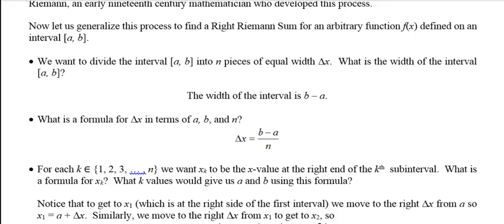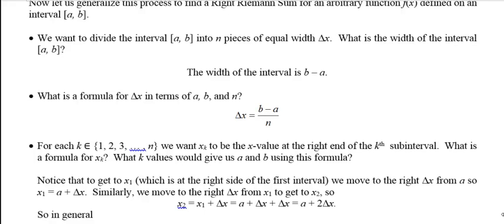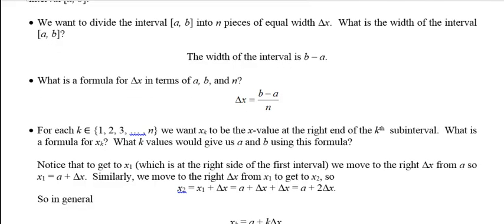So x₁, that's going to be the x value at the right side of the first interval, at the right side of the first rectangle. So to get there, we start at a on the left side of the first rectangle, and we move to the right by Δx. So x₁ is a plus Δx. Similarly, we move Δx from x₁ to get to x₂. So x₂ is x₁ plus Δx, or in other words, a plus Δx plus Δx, which is a plus two Δx's.